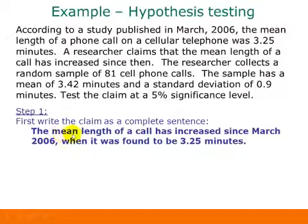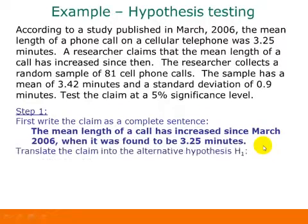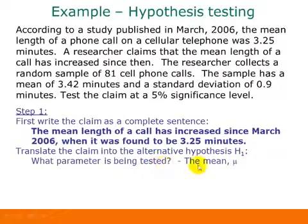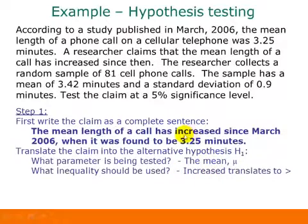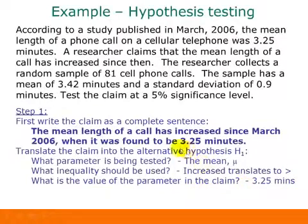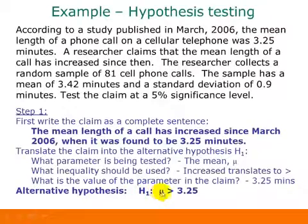This tells us what parameter we're talking about (the mean), how it has changed (increased), and the value 3.25 that we need to know. We translate this statement into our alternative hypothesis. What parameter are we testing? The mean, so we use the symbol mu. What inequality should we use? Increased translates to greater than because it's gone up since March 2006. The value of the parameter in the claim was 3.25 minutes. So our alternative hypothesis is mu is greater than 3.25. For the null hypothesis, we replace the greater than with an equal sign.